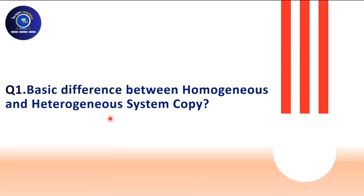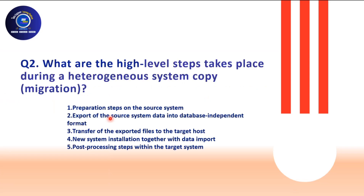Let's go to question number two: what are the high-level steps that take place during a heterogeneous system copy? There are a lot of steps. You can join our OSDB migration training or refer to the OSDB migration guide for full details. At a high level, first is preparation — there are a lot of preparation steps required in the source system. Then you take the export of your source, which is a classical migration option, exporting data in a database-independent format.